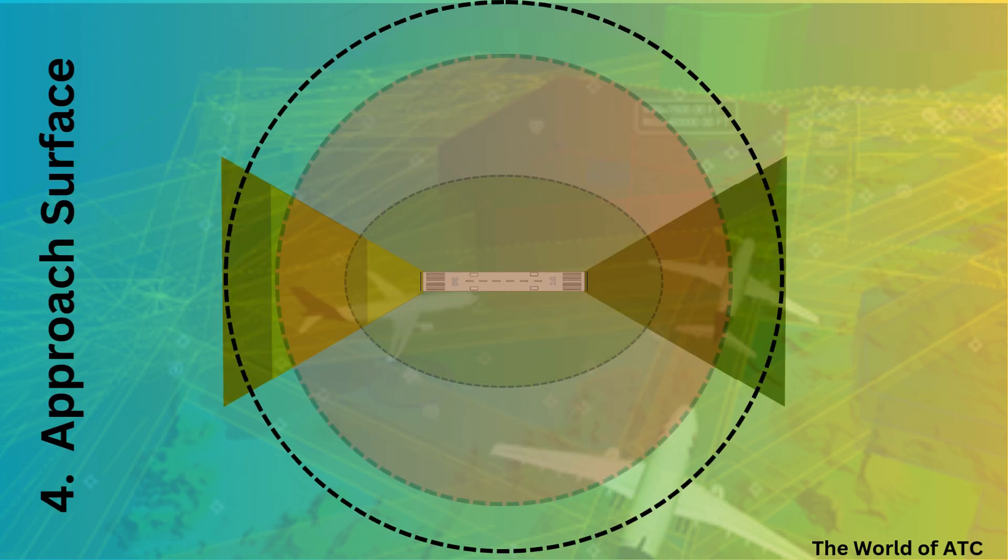A top view of approach surfaces for both the runways would somehow look like this. There are three different color codings, each representing three different planes making up the approach surface.